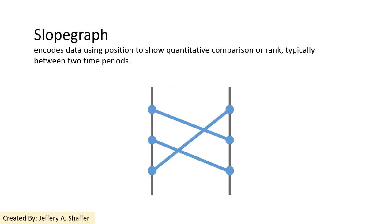The first one is called a slope graph. A slope graph is normally used to show the trend of a variable across two time periods. Normally it should compare the ranks between the two time periods.